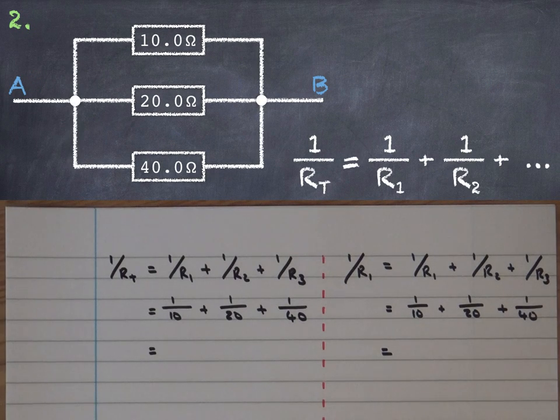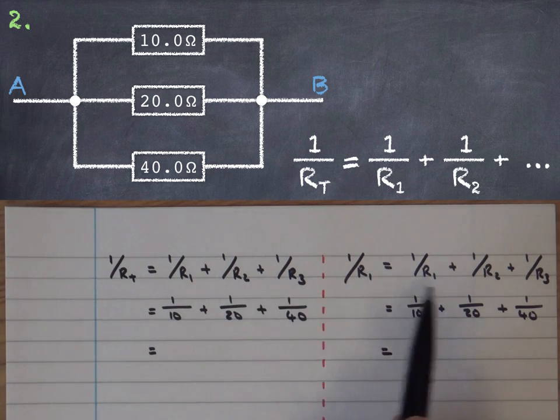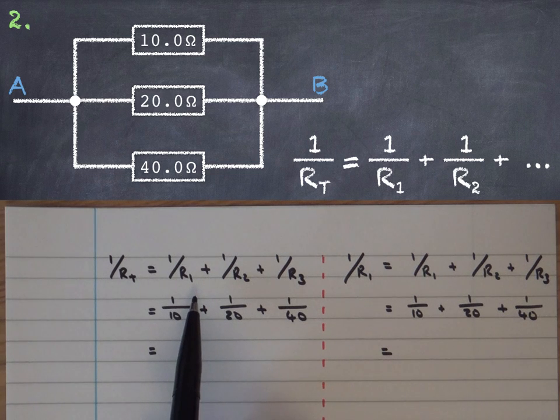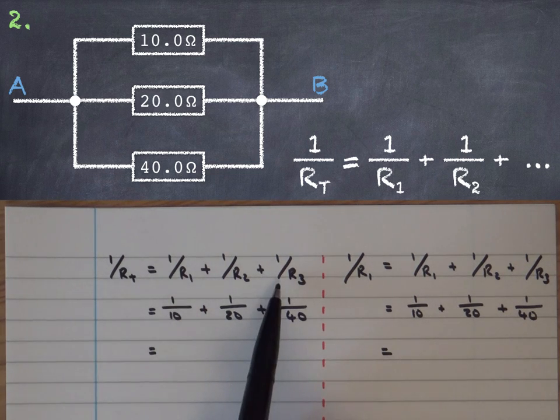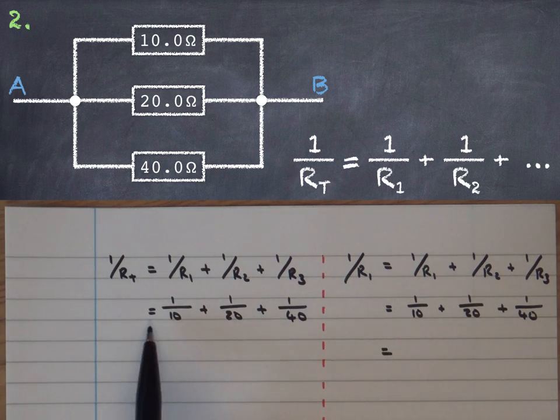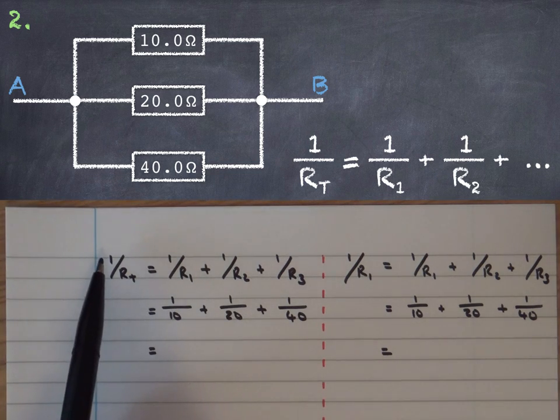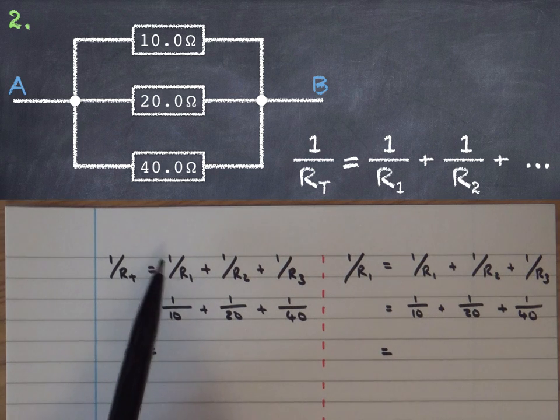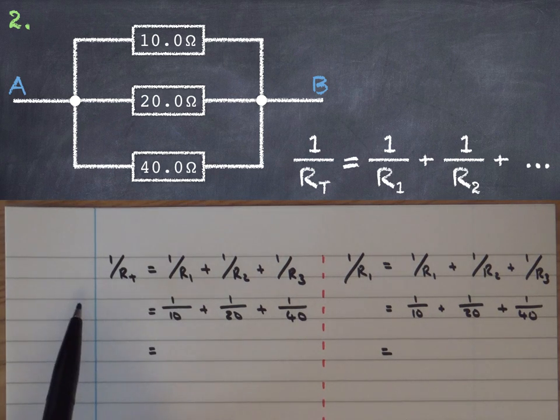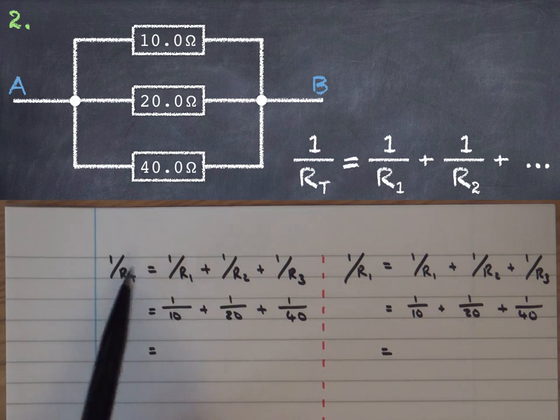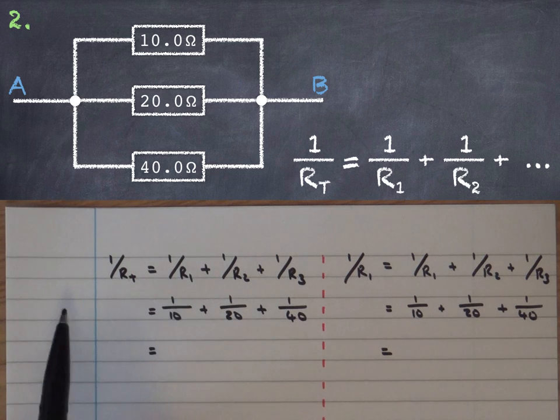For the second question notice first of all that it's the same three resistors we had in the last example. Since they're in parallel I'm going to use this equation. Why I've written it twice is I'm actually going to show you two different ways to work it out. Top line is always the same as is the second line that's the substitution and then the two methods will vary from that point. Notice as well the equation is 1 over RT equals 1 over R1. So be careful I have seen people write RT is 1 over R1 plus 1 over R2 - get no marks for that.